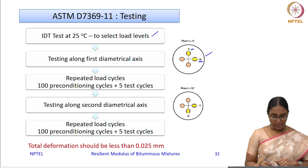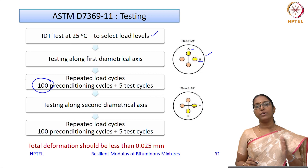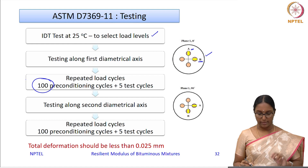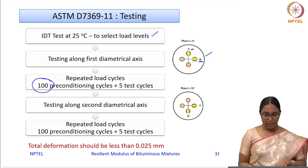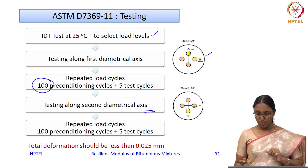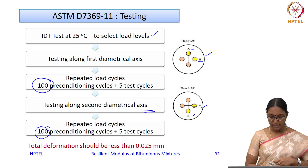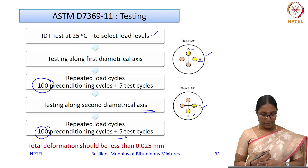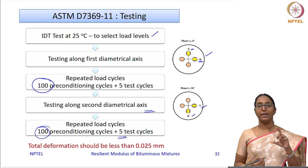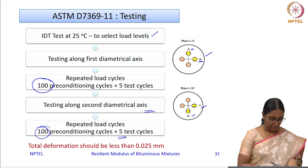One hundred preconditioning cycles are applied as specified. After the 100 preconditioning cycles, the next 5 cycles are taken as test cycles, and information is captured during those 5 cycles. The specimen is then rotated 90 degrees so that LVDT A moves to the horizontal position and LVDT B to the vertical. The procedure of 100 preconditioning cycles and 5 test cycles is repeated in this 90-degree arrangement.